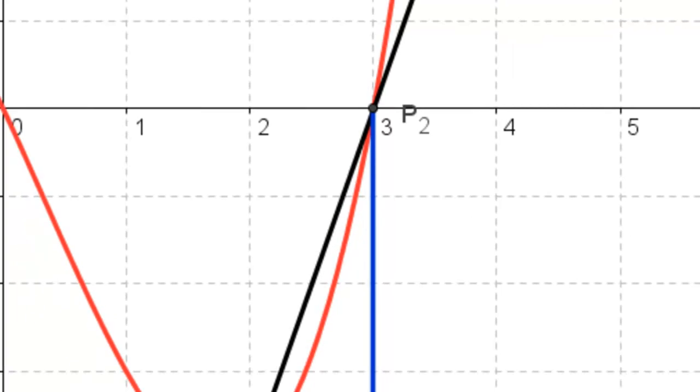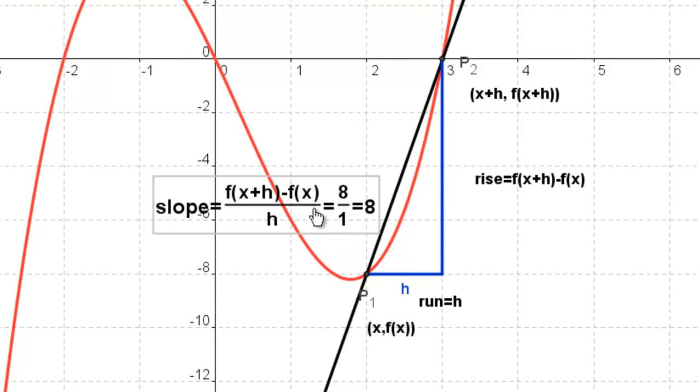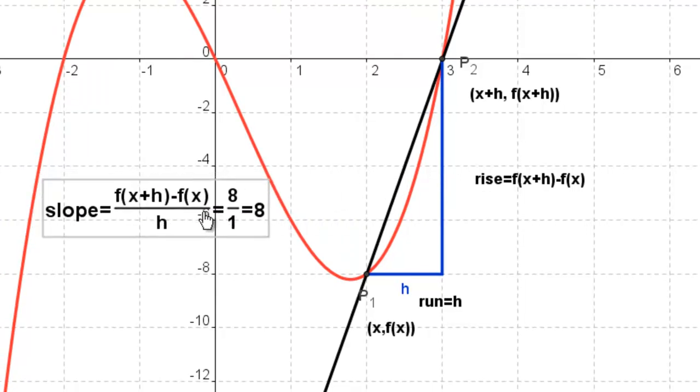And so my x coordinate is going to be x plus h, and my y coordinate is going to be the value of whatever the function is at x plus h. So in other words, my run is h, and my rise is going to be f(x+h) minus f(x). And so I can get my slope equation, and it looks like this.